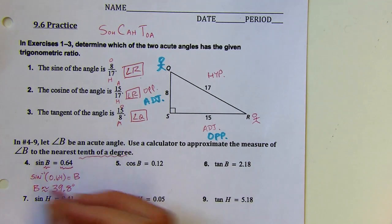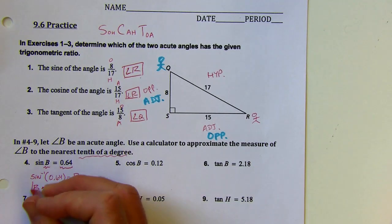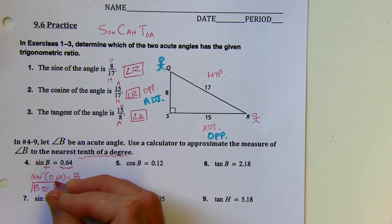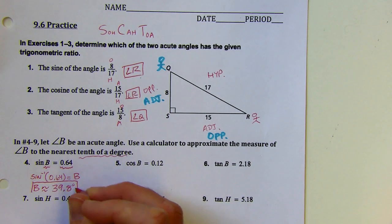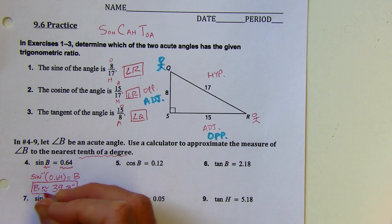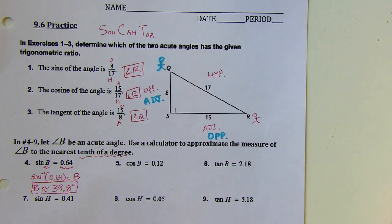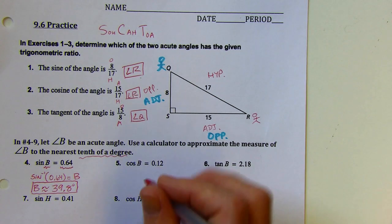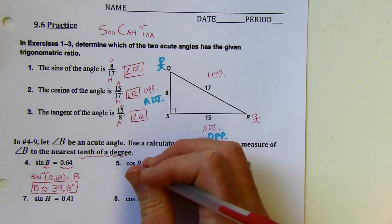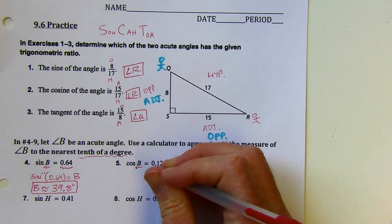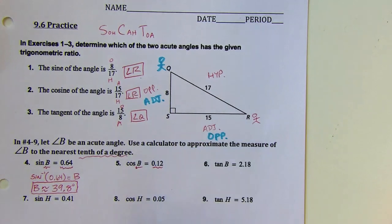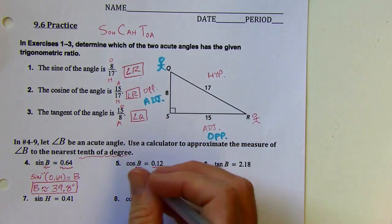So I'm going to call that about 39.8 degrees. It's really important to put the degree symbol in my answer, because if I don't, this would be a radian measure, which is not what we're doing. These are pretty quick once you get the hang of it — you're going to use the inverse of the trig functions on all of these.